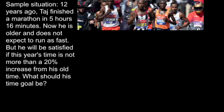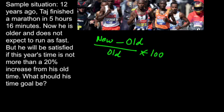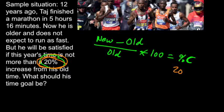Sample situation number two. Twelve years ago, Taj finished a marathon in 5 hours, 16 minutes. Now he's older and doesn't expect to run as fast, but he'll be satisfied if this year's time is not more than a 20% increase from his old time. What should his time goal be? New time minus old time, divided by old time, times 100 gives percent change. My percent here is 20%; I know the old value but not the new value yet.